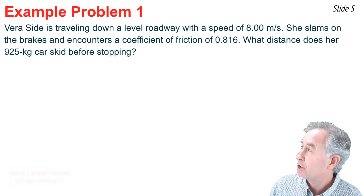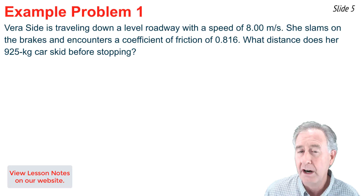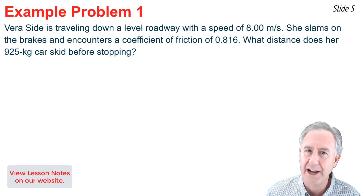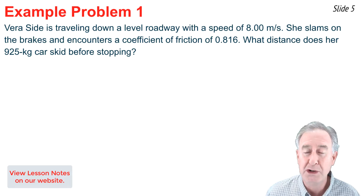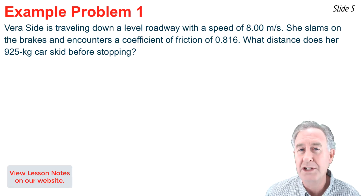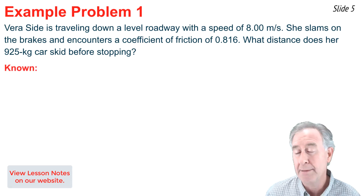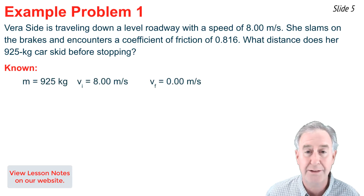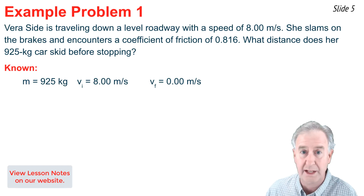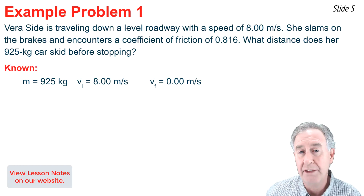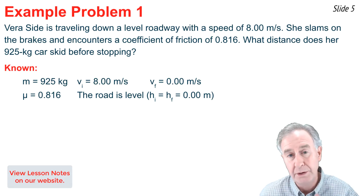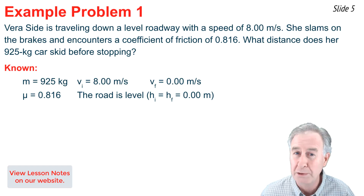Example 1: a 925 kg car moving at 8 m/s along a level highway skids to a stop. The coefficient of friction μ = 0.816. What distance does it skid before stopping? Known values: V_i = 8 m/s, V_f = 0, m = 925 kg, μ = 0.816. Since the road is level, H_i and H_f are both zero. We are looking for the skid distance d.